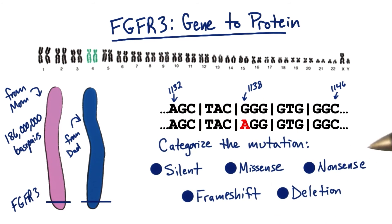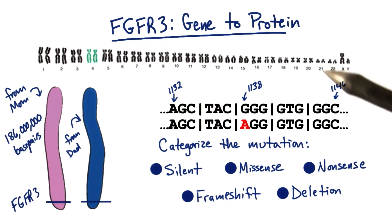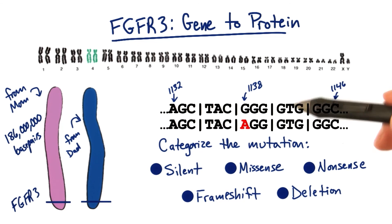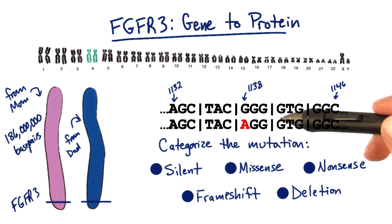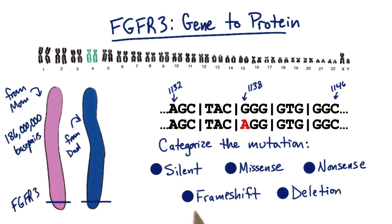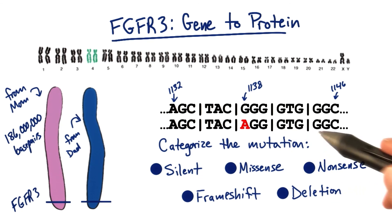Using the genetic code, which we learned about in lesson three and which you can find posted in the instructor's notes on this page, I want you to determine the change expected in the amino acid sequence, and then select the type of mutation best used to describe this allele from the list below.